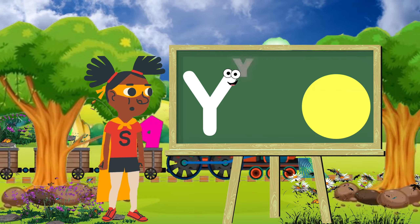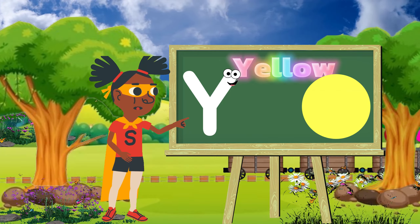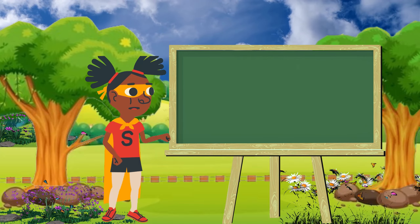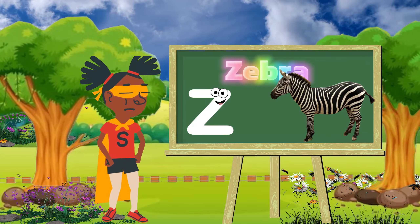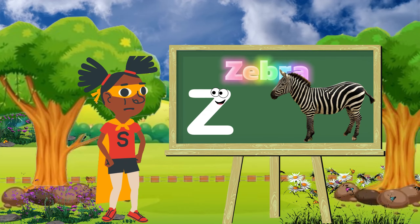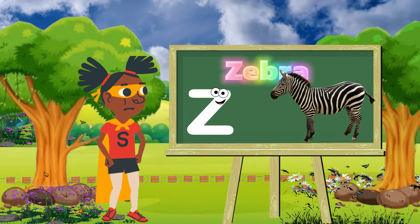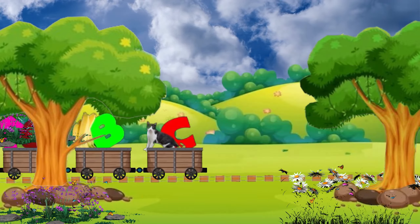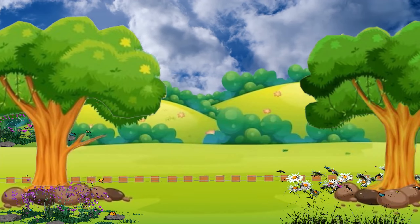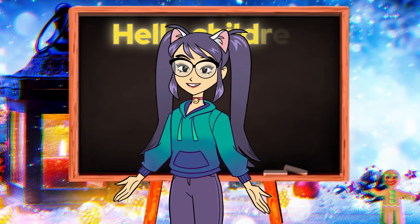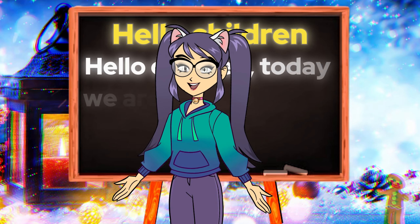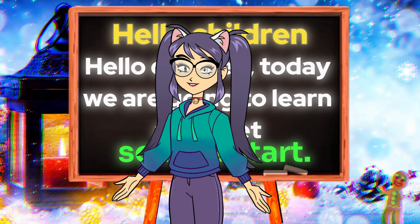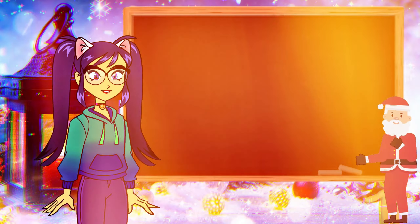W is for whale. Wah, wah, whale. X is for xylophone. KS, KS, xylophone. Y is for yellow. Y-Y-Y, yellow. Z is for zebra. Z-Z-Z-Z, zebra.